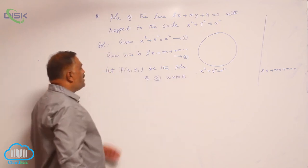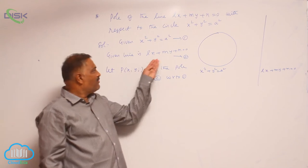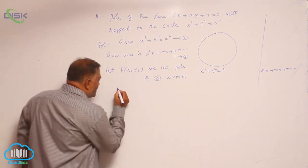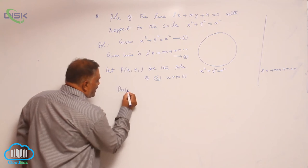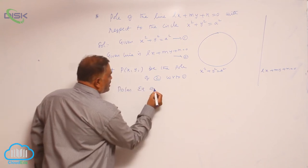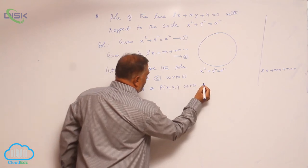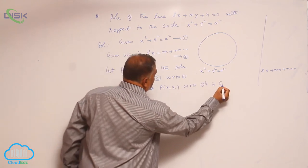P(x₁, y₁) is the pole of the given line with respect to the circle. Now, we know that the polar equation of P(x₁, y₁) with respect to the circle is S₁ = 0.